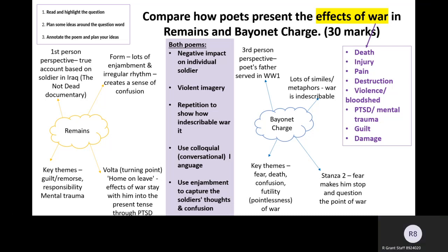For Bayonet Charge, I know that this is a third person perspective and the poet's father served in World War One, but this poem was written much after. Key themes in this poem are fear and the futility or pointlessness of war. Confusion again pops up. Structurally, in stanza two there's a bit of a shift because everything seems to slow down and he starts to question what the point of war is. In this poem there are loads of similes and metaphors to try and put into words an event which is quite indescribable to most of us — it's quite confusing with the amount of imagery it uses to try and convey the chaos of warfare.